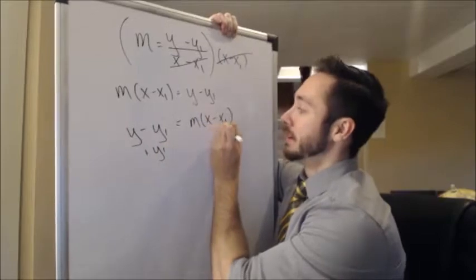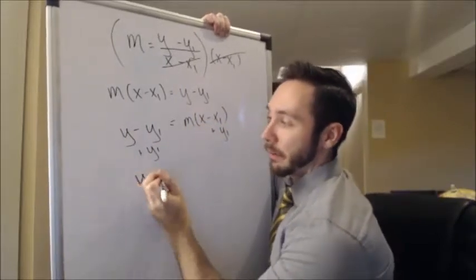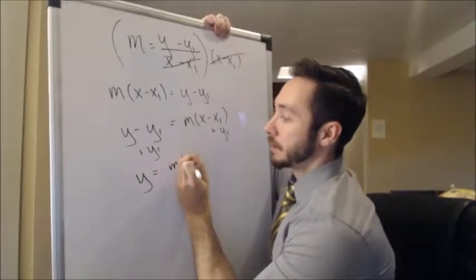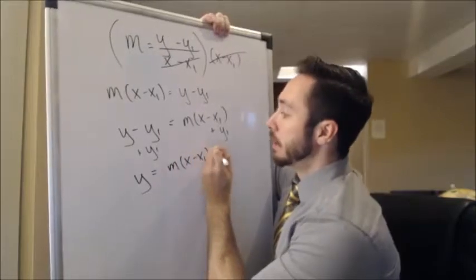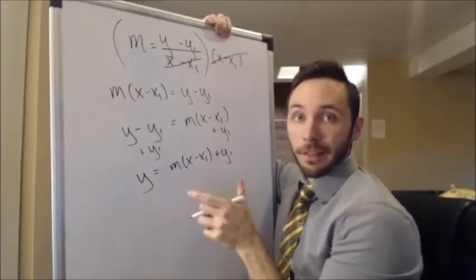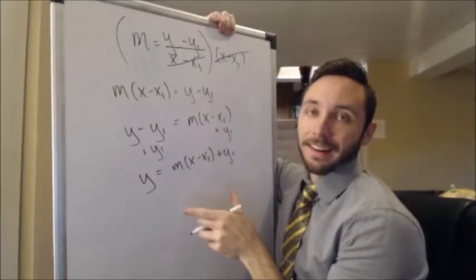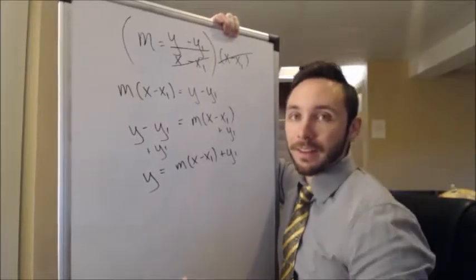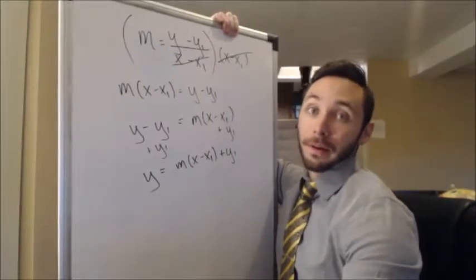I'm going to add the y sub 1 to both sides. Here I'm going to get y is equal to m times quantity of x minus x sub 1 plus y sub 1. This is kind of the new way that people are saying you should kind of introduce point-slope as.